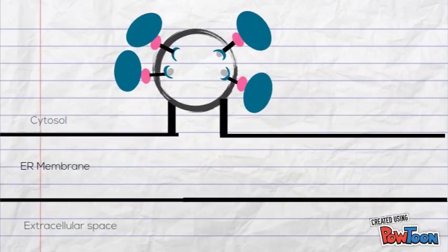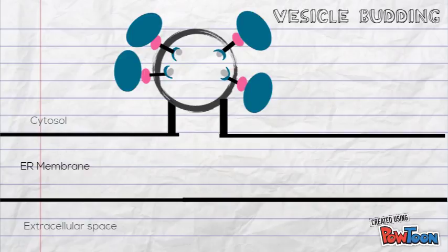Clatherin helps to shape the membrane to bud and to capture molecules for transport. It assembles into a basket-like network and starts shaping the membrane into a vesicle.